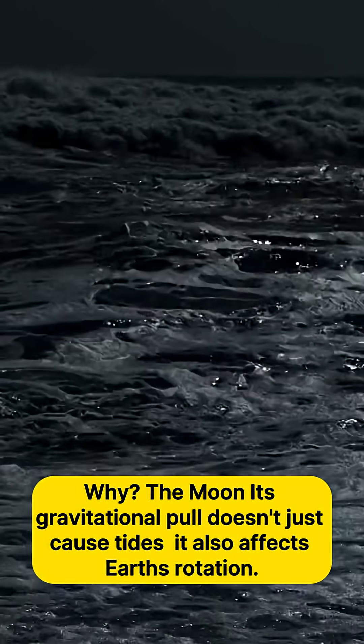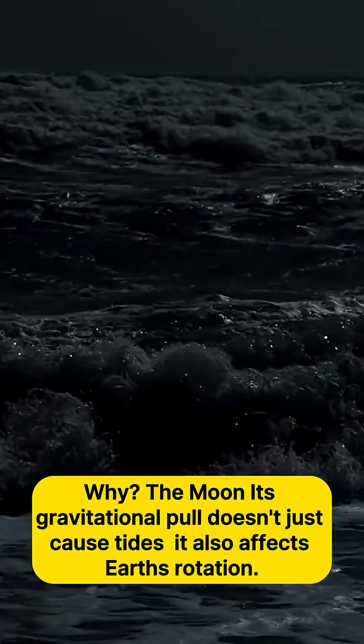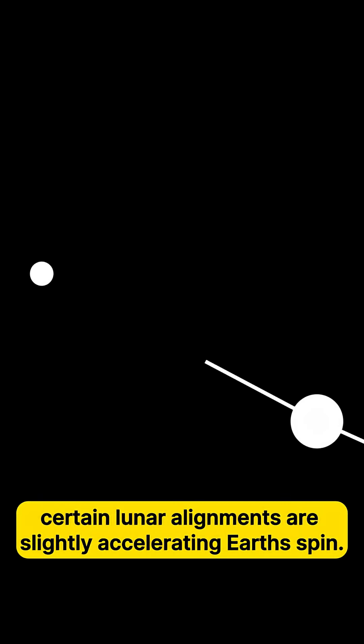The moon. Its gravitational pull doesn't just cause tides, it also affects Earth's rotation. Right now, certain lunar alignments are slightly accelerating Earth's spin.